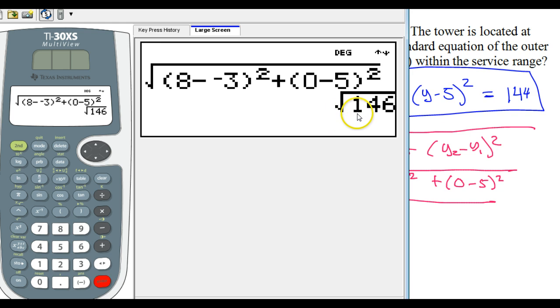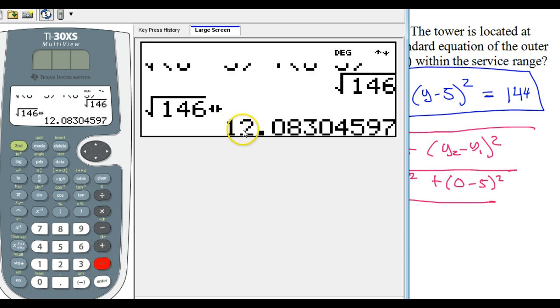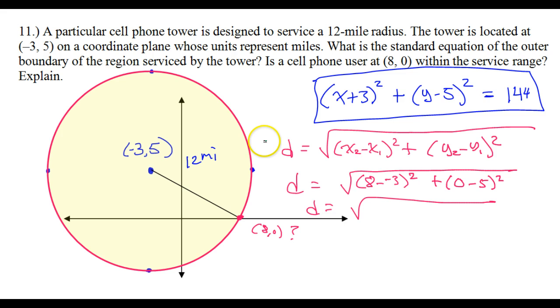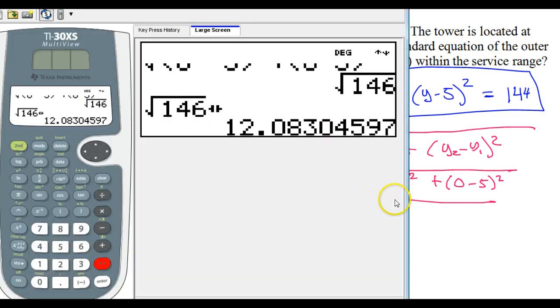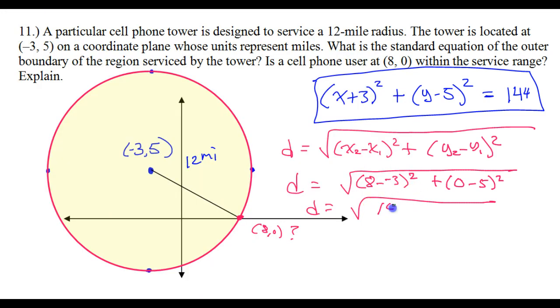Okay, so I got 146, radical 146. And if I toggle this, I get 12.08. Should I write this down? All right, so this is 146. So this distance turned out to be 12.08 miles.